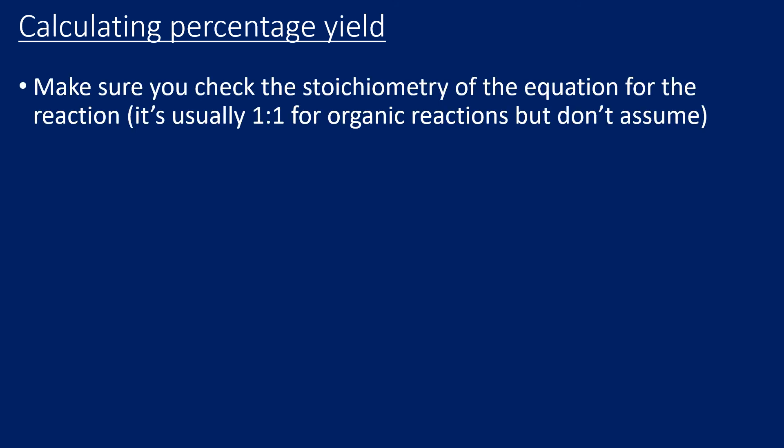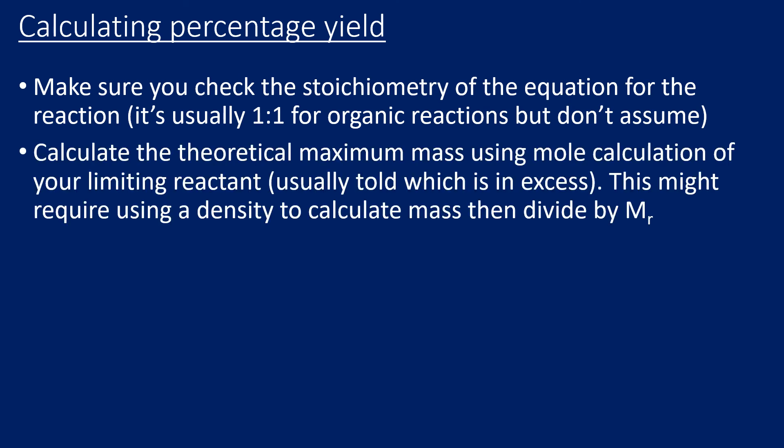The final step of any organic practical, once you've isolated your pure product, is to record its mass and carry out a percentage yield calculation. Before calculating moles, double-check the stoichiometry of your reaction equation — usually in organic reactions it's a one-to-one ratio of reactant to product. Calculate the theoretical maximum mass via a molar calculation using the moles of the limiting reactant. If you used a liquid reactant, you'll likely be given a volume and density rather than a mass, so calculate mass using: mass = density × volume, then divide by the molecular mass to get moles.